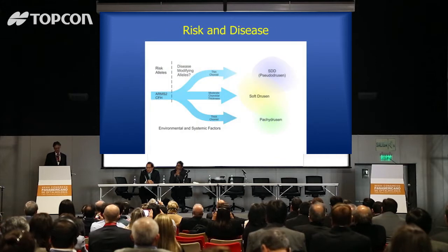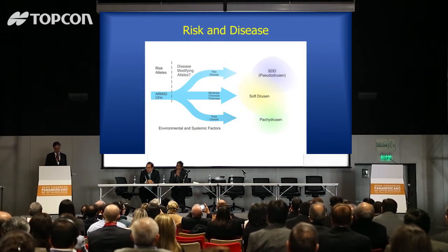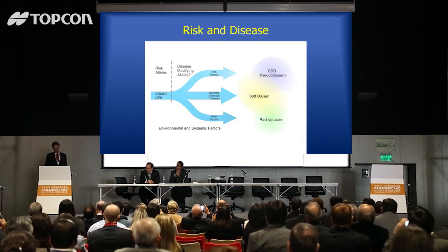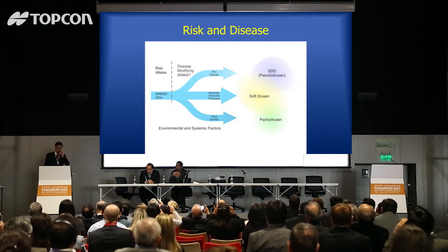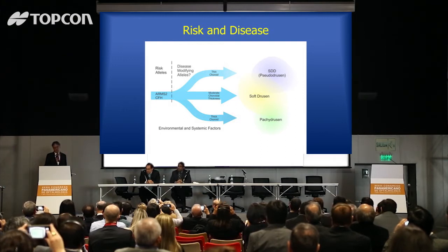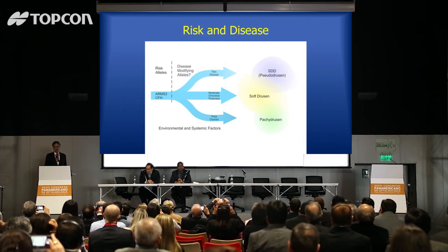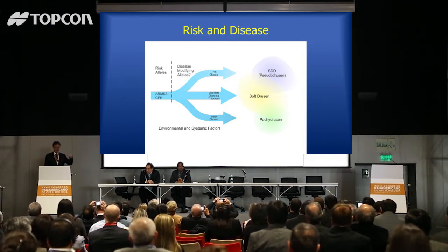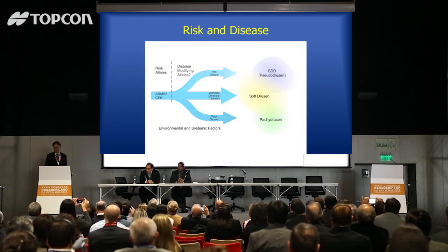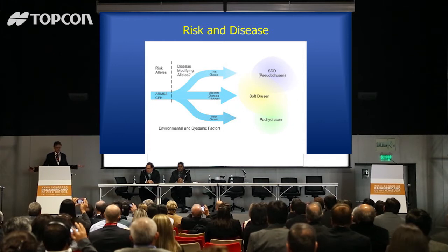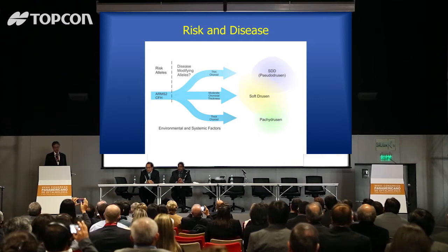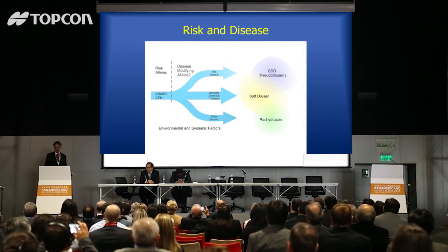We start off with risk alleles like ARMS2 and complement factor H, which could lead to AMD over time given the right environment and systemic factors. But I think it's possible to split AMD into three groups based on choroidal thickness, and there are probably genes that control that as well. The next step is further sub-classification of AMD to better understand how it starts. Right now we're pretty clueless about why people progress to CNV or geographic atrophy, but this may be another layer to peel back to learn more.